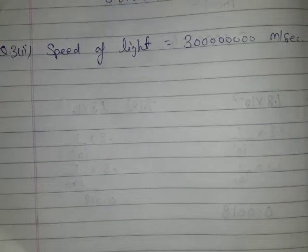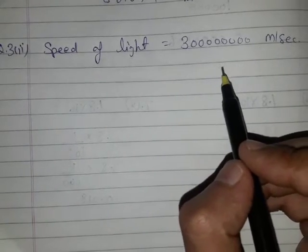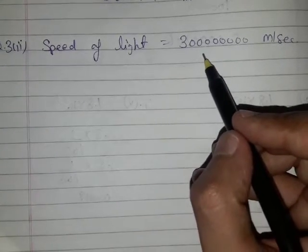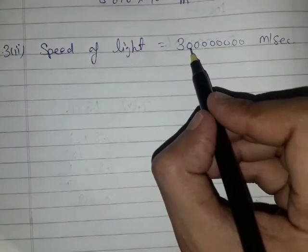In the second part of question number three, the speed of light is given as 30 crore meters per second, and we have to convert this speed to standard form of numbers. We can count the number of zeros: one, two, three, four, five, six, seven, eight - there are eight zeros.